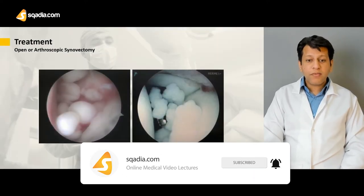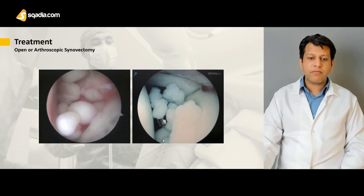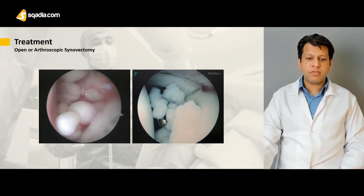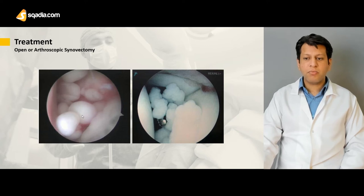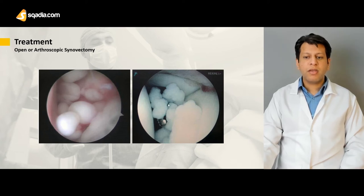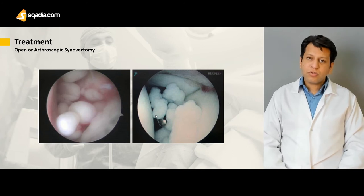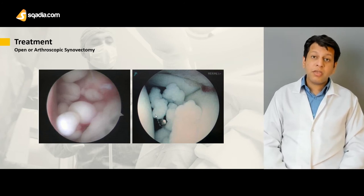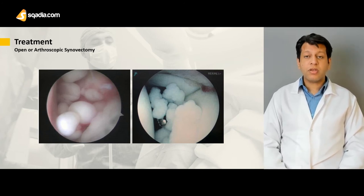If you see it over here, this is the arthroscopic view of multiple loose bodies and cartilaginous lesions inside the hip joint. In another case, loose bodies are arthroscopically being removed from the joint, and arthroscopic synovectomy is also an option that can be easily done by use of an arthroscope.